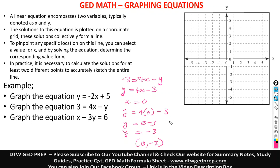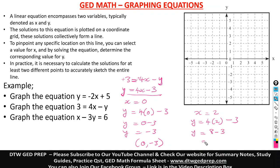Now let us pick another value for X. Let's say X is equal to 2. So Y equals 4 times 2, minus 3. That is 8 minus 3, which gives us 5. So we have here X as 2, Y as 5.